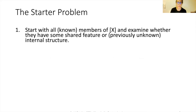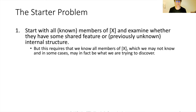That is: what does it take to be a member of the group, what features matter to its identity, and what does it take for that group to persist? I call this the 'starter problem' — where do we start? One way we might try is to start with all known members of the group and examine whether they share some feature or previously unknown internal structure. But this requires that we already know who all members of the group are, and in some cases that is just what we are trying to discover.